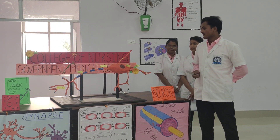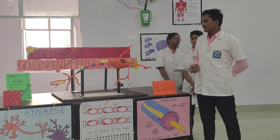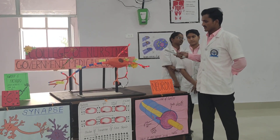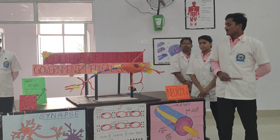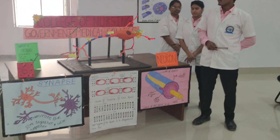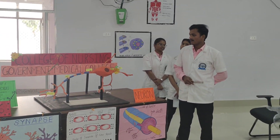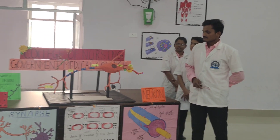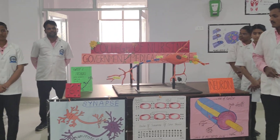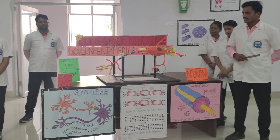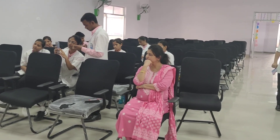The dendrite receives the signal from the axon terminal of the corresponding neuron. Then the signal is transferred to the cyton, and the cyton converts it into an electrical signal and then transfers it to the axon. Through the axon, the signal reaches the axon terminal, and through the synaptic knob it is converted into a signal and transferred to the next or corresponding neuron.